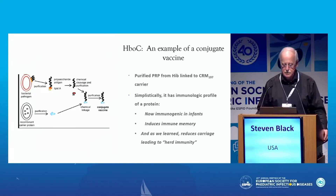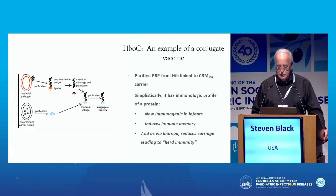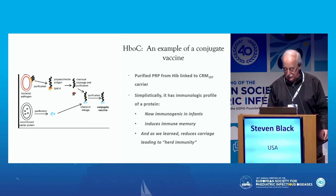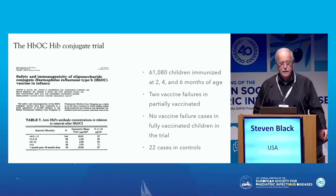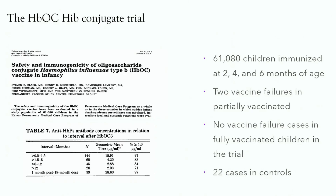One example of this was the HBOC Hib vaccine, where purified polysaccharide from Hib was linked to a CRM carrier protein. Children are now routinely immunized with it. It was immunogenic in infants, induced immune memory, and reduced carriage, leading to herd immunity. I had the privilege of conducting the clinical trial for licensure of this vaccine, with 61,000 children immunized at two, four, and six months of age. There were only two vaccine failures — both in children who had received only one dose — no failures in fully vaccinated children, and 22 cases in the control group.